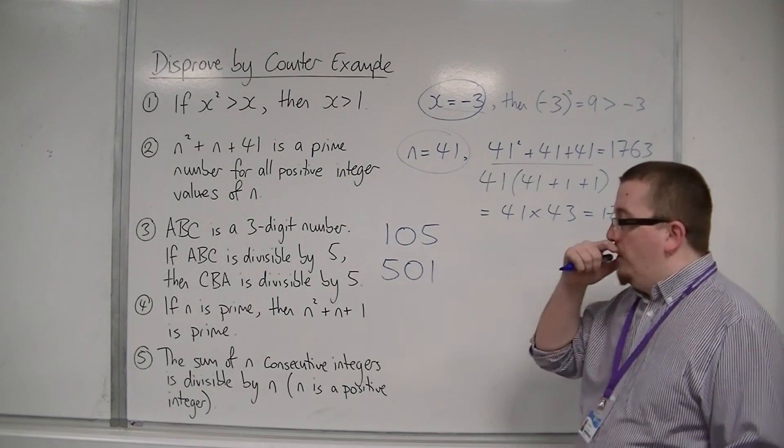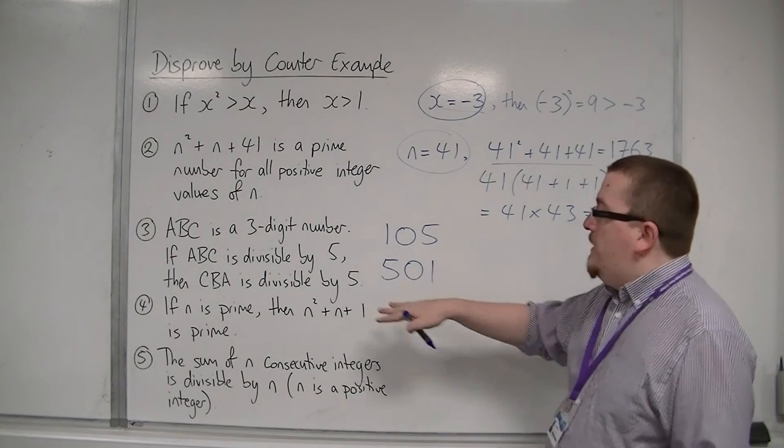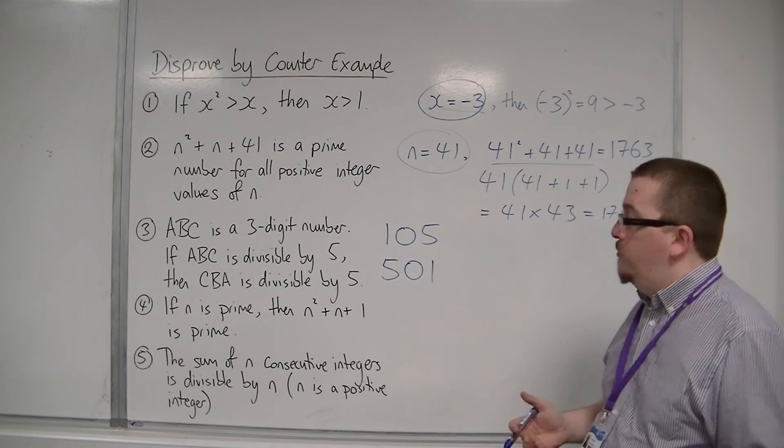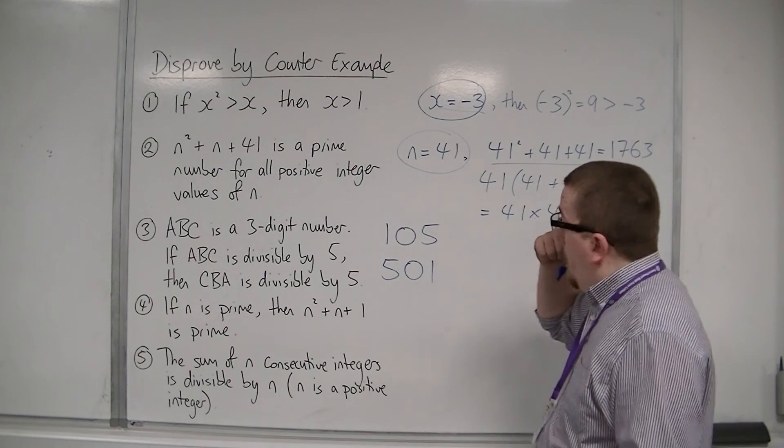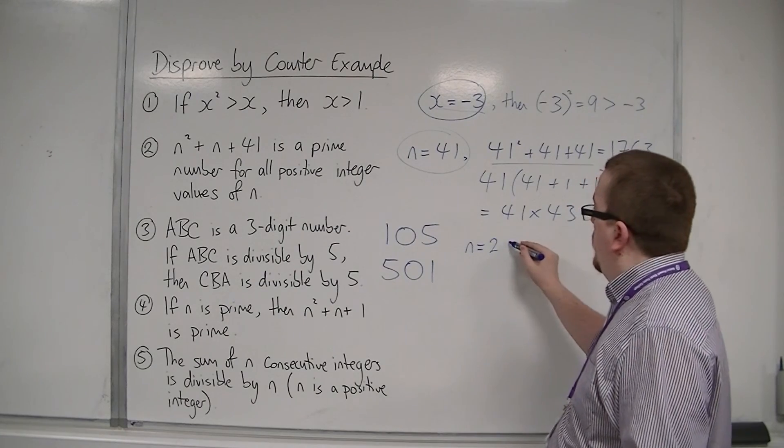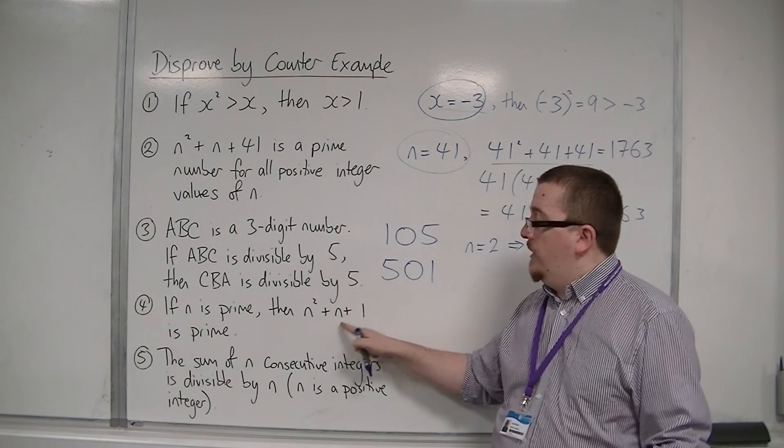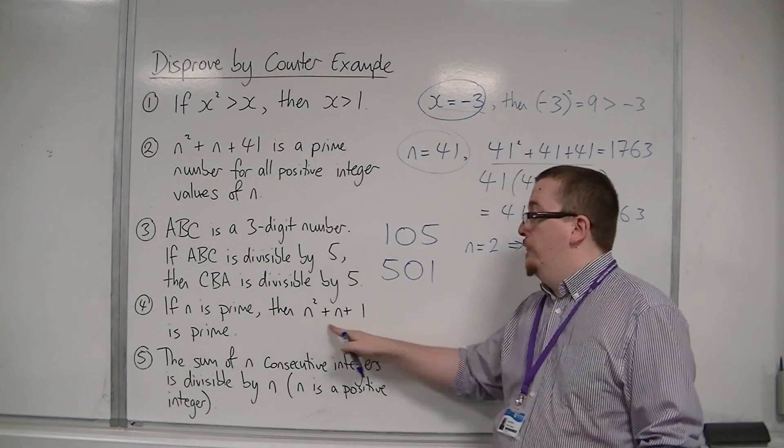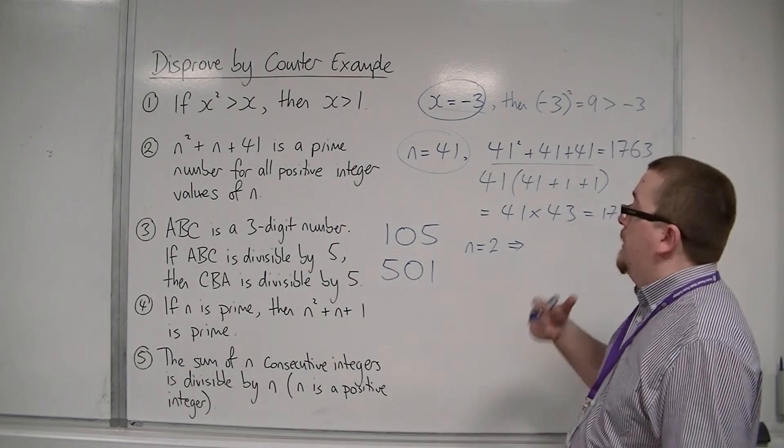So let's have a look at number 4. If n is prime, then n squared plus n plus 1 is prime. So if n is prime, let's choose the first prime number, n is 2. So we're going to get 2 squared plus 2 plus 1, so 4 plus 2 plus 1 is 7. Now that's prime.